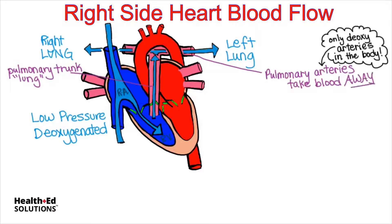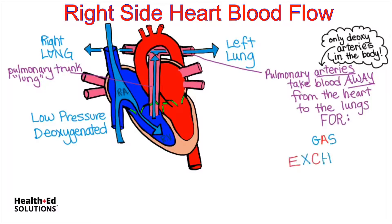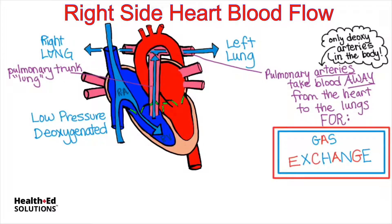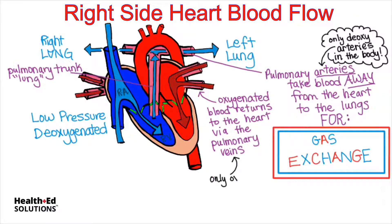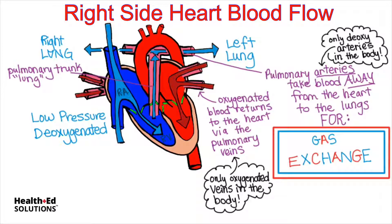These arteries take blood away from the heart and deliver it to the lungs for gas exchange. This deoxygenated blood will drop off its carbon dioxide and pick up oxygen. Then it brings this oxygen-rich blood back to the left side of the heart through the pulmonary veins. So oxygenated blood returns to the heart via the pulmonary veins. The pulmonary veins are the only oxygenated veins in the body. Again, the fetal circulation has an exception, but we will discuss that in a different video.